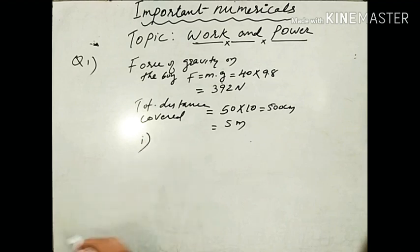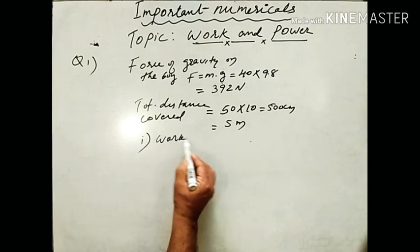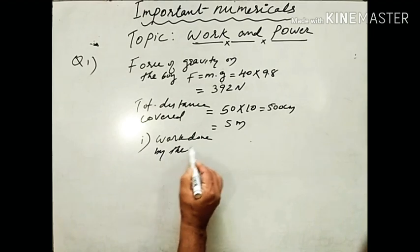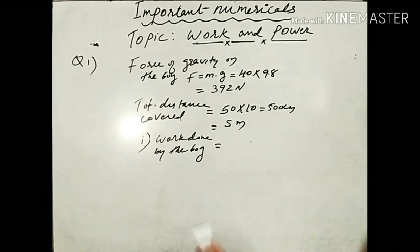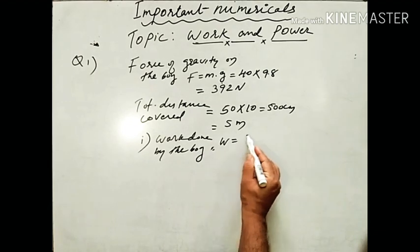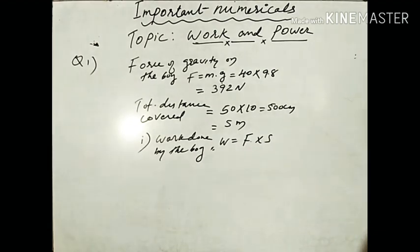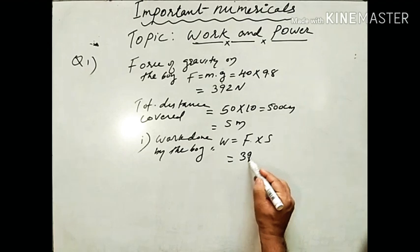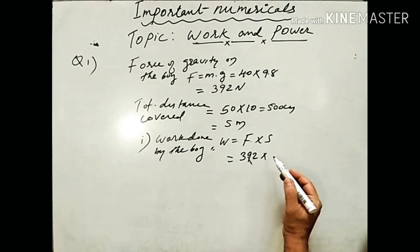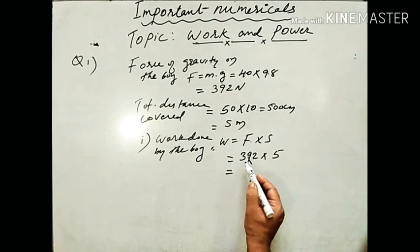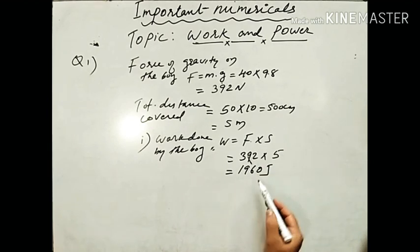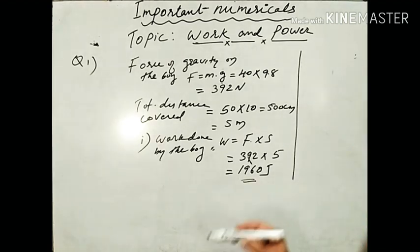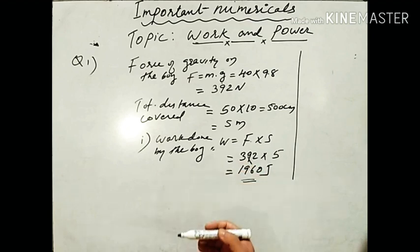Work done by the boy: W = force × displacement. Force is 392 Newton, distance is 5 meter. So W = 392 × 5 = 1960 Joule. The unit of work done is Joule. The first sub-part is complete.